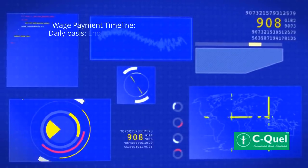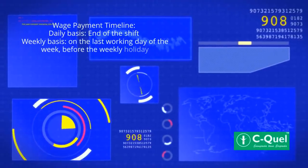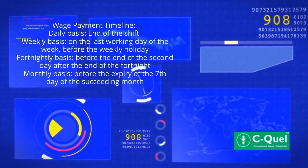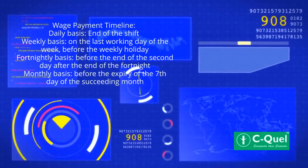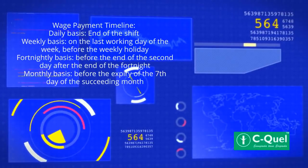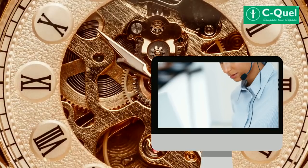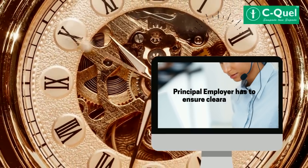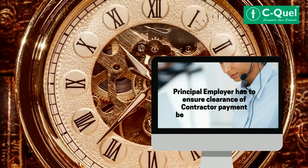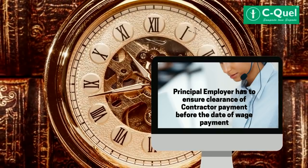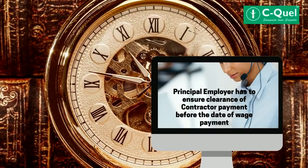Wage payment timeline: daily basis — end of the shift; weekly basis — on the last working day of the week before the weekly holiday; fortnightly basis — before the end of the second day after the end of the fortnight; monthly basis — before the expiry of the seventh day of the succeeding month. Importantly, the wage period is not to exceed one month. And the principal employer has to ensure clearance of contractor payment before the date of wage payment. The code envisages uniform applicability of the provisions of timely payment of wages and minimum wages to all employees, irrespective of the wage ceiling and sector.